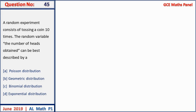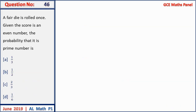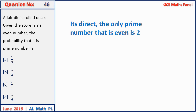Question 45: a coin is tossed 10 times; the random variable is the number of heads. Since the probability of a head is constant, trials are fixed and independent, the best distribution is binomial with parameters n and p. Question 46: a fair die is rolled; given the score is even, find the probability it is prime. The only even prime is 2, and its probability is 1/6. Answer D.